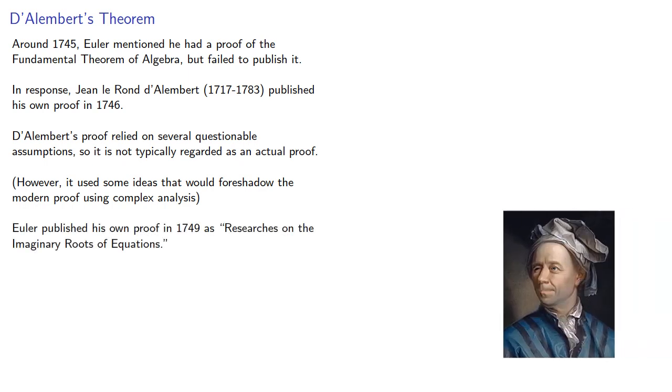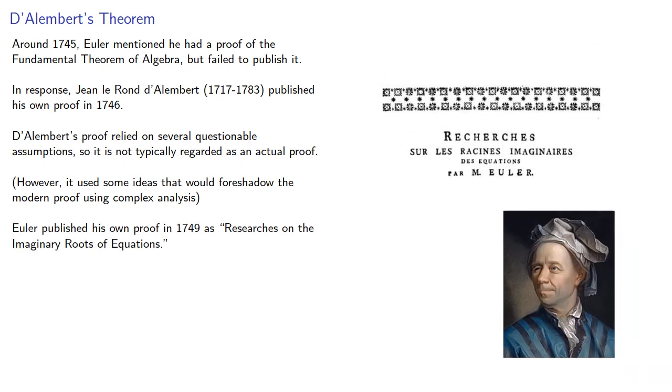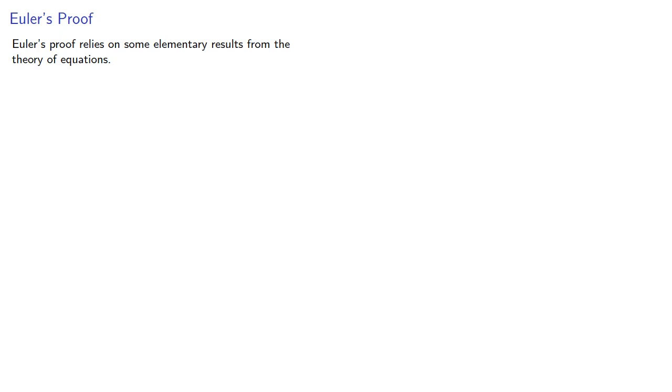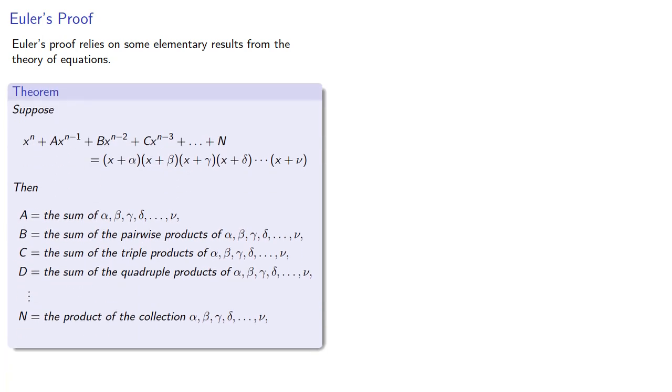Euler eventually published his own proof in 1749 as Researches on the Imaginary Roots of Equations. Euler's proof relies on some elementary results from the theory of equations. The most important one is that given the factorization of a polynomial, the coefficients of the polynomial can be determined by sums of products of the roots.